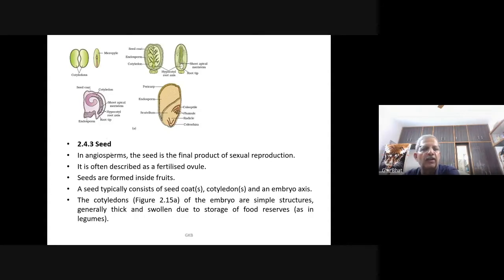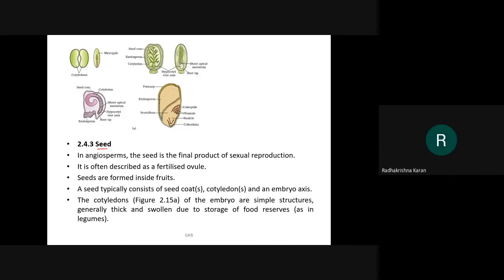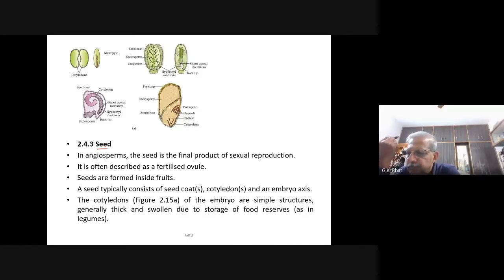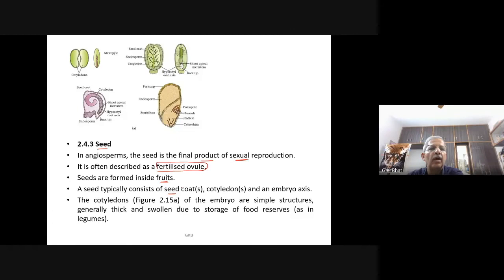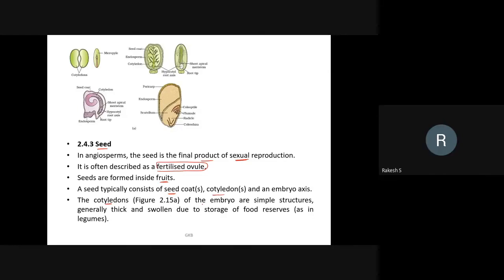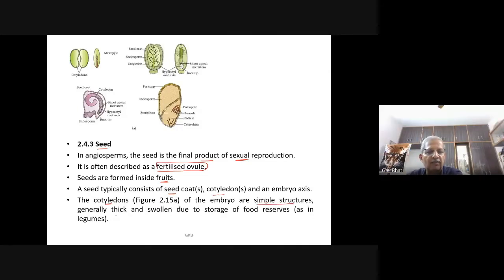Now let us look into the seed. In angiosperms, the seed is the final product of sexual reproduction — often described as a fertilized ovule. Seeds are formed inside fruits. A seed typically consists of a seed coat, cotyledons, and an embryonal axis. The cotyledons of the embryo are simple structures, generally thick and swollen due to storage of food reserves as seen in legumes.